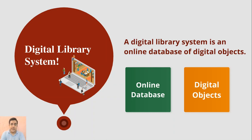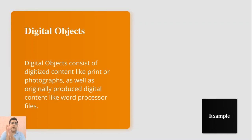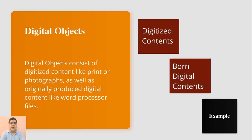Let us understand digital objects first. A digital object consists of digitized content like print or photographs, as well as originally produced digital content like word processor files or MP3 format. So we have two types of content: digitized content and born digital content. Digitized content means we have collections of print books, print cases, print articles, or still photographs that we scan and make digital through the digitization process.